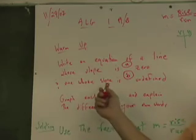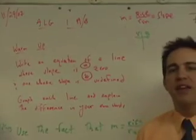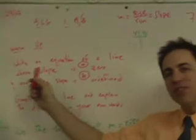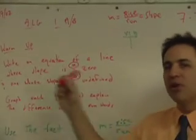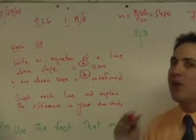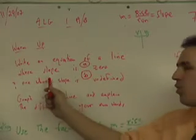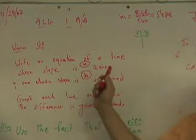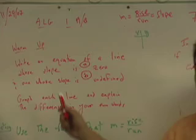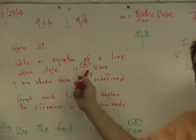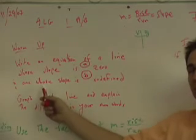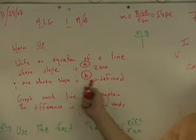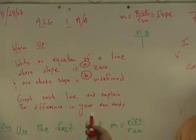This question seems to be bothering a lot of people in both classes. You're asked to write an equation. Remember equation, table, graph? Well, this is asking for an equation of a line whose slope is zero. So that's the A part of the question. Write an equation of a line whose slope is zero, and another one whose slope is undefined. So you have to write two equations of two different lines.